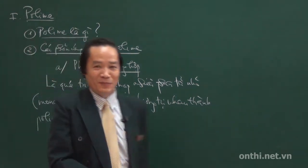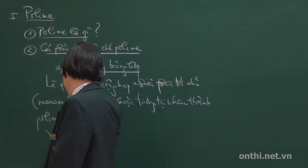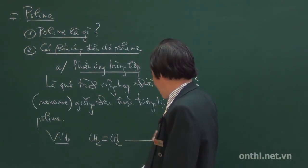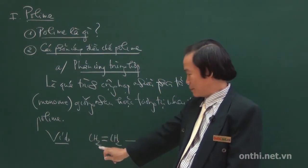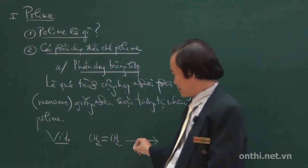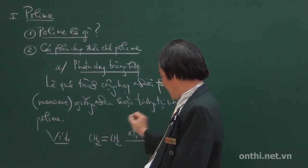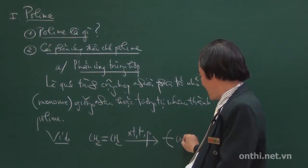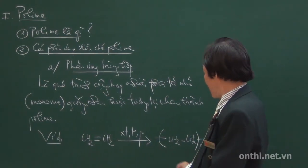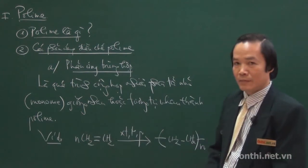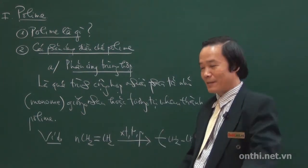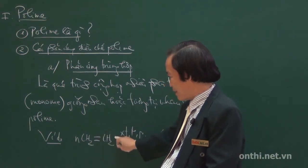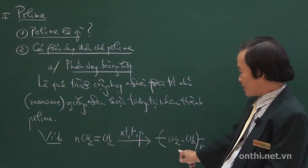Ta có vô số ví dụ. Đây là ethylene — là phân tử nhỏ hay còn gọi là monomer. Dưới ảnh hưởng của xúc tác, nhiệt độ, áp suất, các em sẽ thu được polymer là polyethylene. Cách viết phản ứng trùng hợp rất đơn giản: ta cho liên kết pi trong nối đôi gãy làm đôi, một nửa văng sang bên phải, một nửa văng sang bên trái, rồi đóng ngoặc n lần.